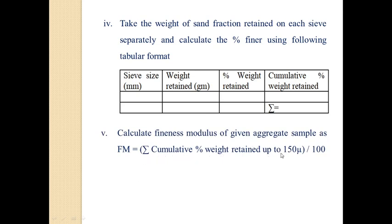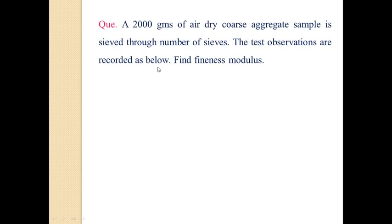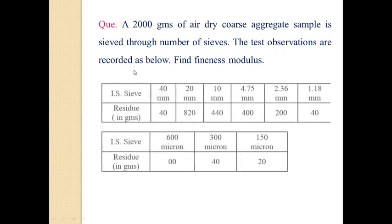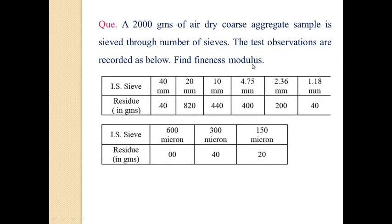Summation cumulative percentage weight retained up to 150 micron divided by 100. So let us see one numerical on fineness modulus of sieve analysis. A 2000 gram of air dry coarse aggregate sample is sieved through the number of sieves. The test observations are recorded as below. So find fineness modulus. Here IS sieves are given, 40 mm to 150 micron and residue in gram is given.